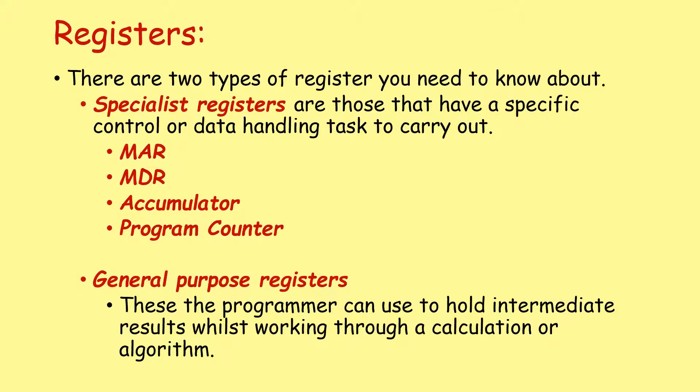There's two types of registers that you need to know about. Specialist registers are those that have specific control or data handling tasks to carry out, such as the memory address register, memory data register, accumulator, and program counter. And you also might have an array of general purpose registers, which can be used by the programmer to hold intermediate results while working through calculations or algorithms.